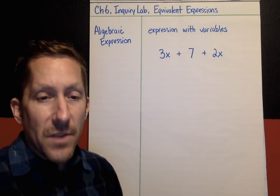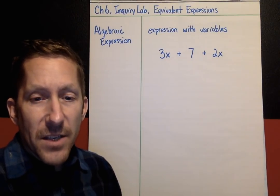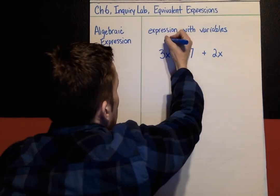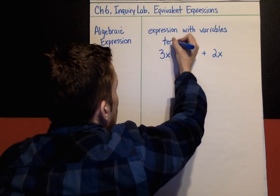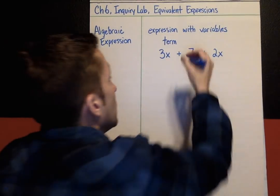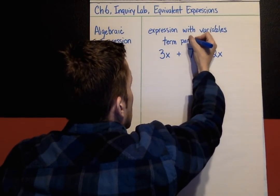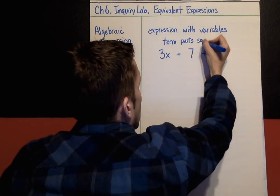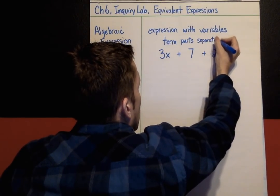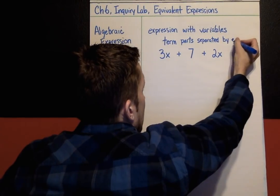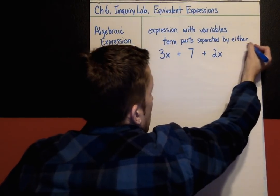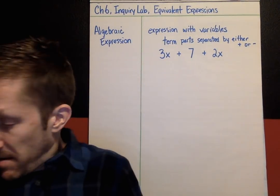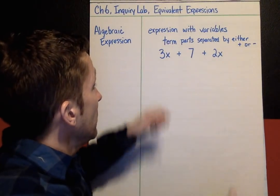Let's talk about some vocabulary. In this algebraic expression there are three terms. Terms are the parts of an expression separated by either a plus sign or a minus sign. So a term is the parts of an expression separated by either a plus sign or a minus sign.